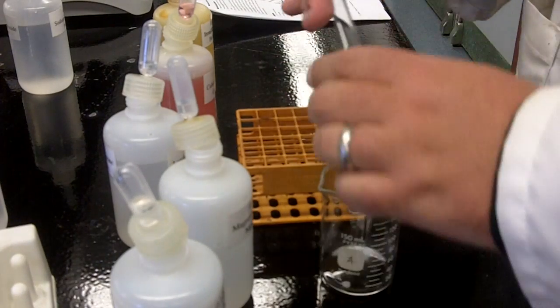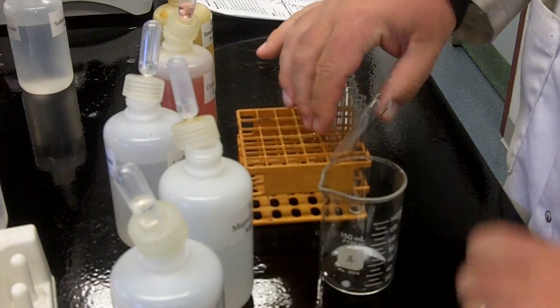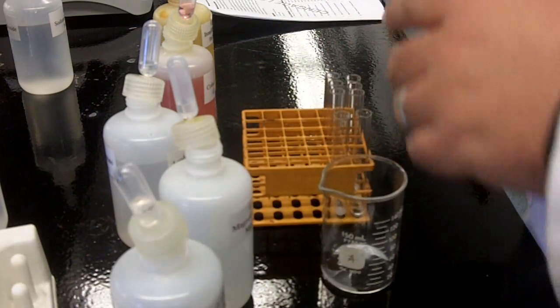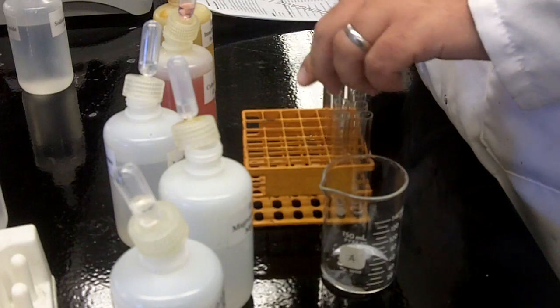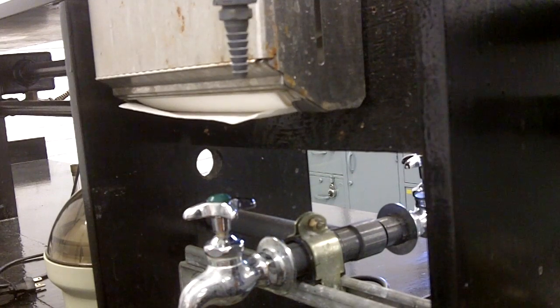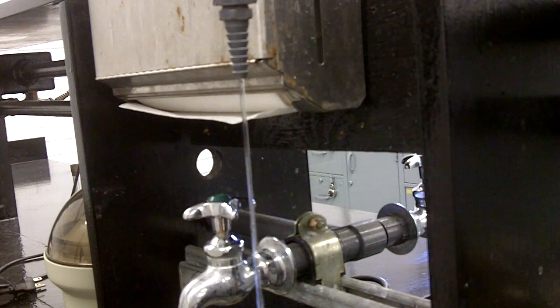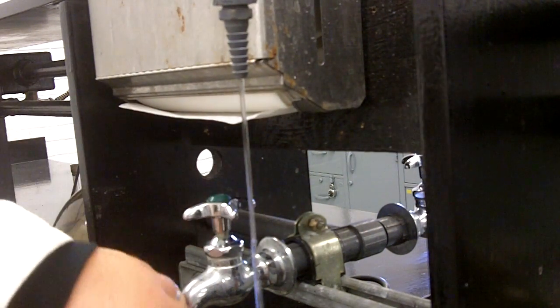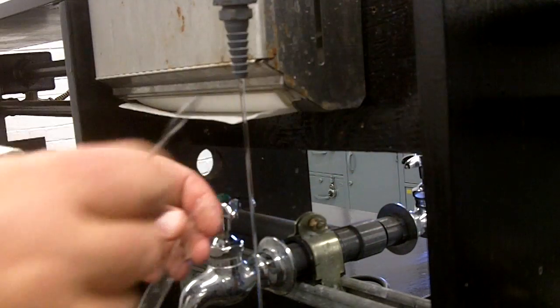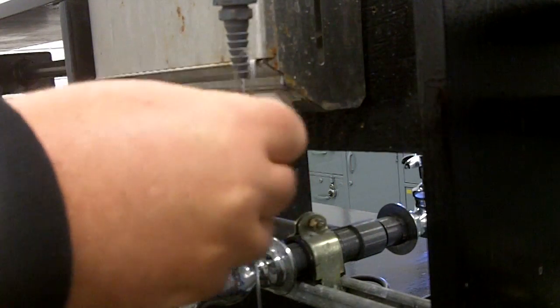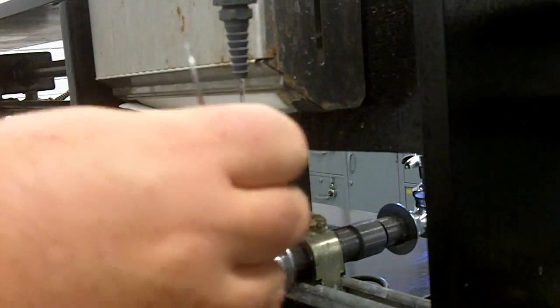When you're done with a particular rack, collect all the waste into some sort of waste beaker at your bench. You'll have potentially 20 to 24 test tubes. Try to get most of it out that you can, and then you can just wash the rest in the sink with the DI water. We have appropriate test tube brushes that are perfect for those things. Just wash them out real well and that'll be fine.